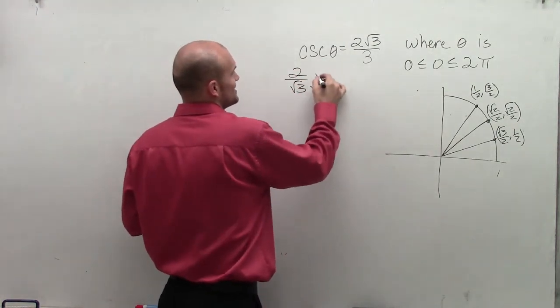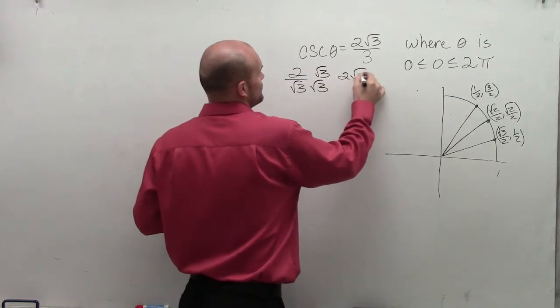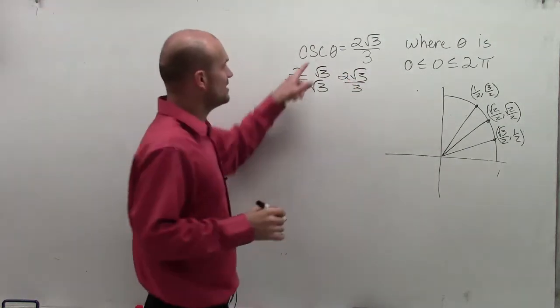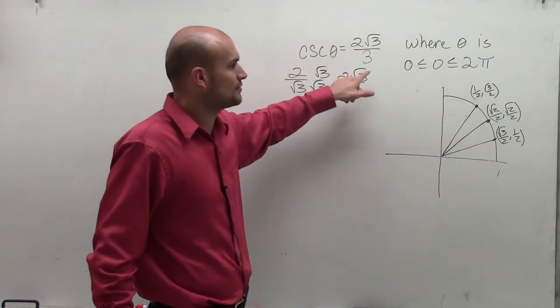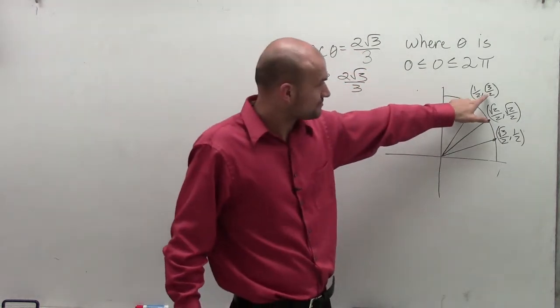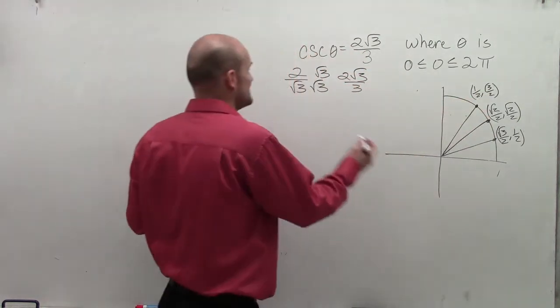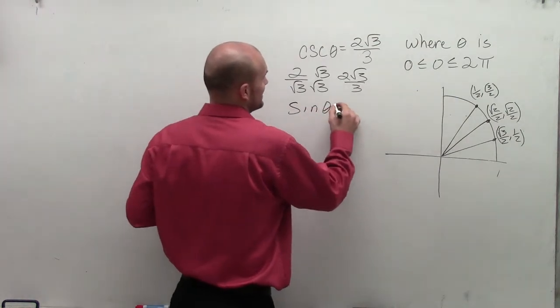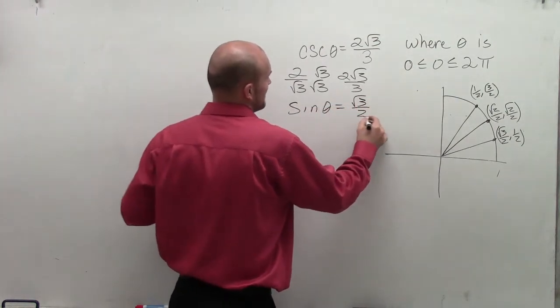Therefore, by rationalizing the denominator, I do get 2 radical 3 over 3. So therefore, that means cosecant of theta, when it equals 2 radical 3 over 3, is the same thing as sine of theta when sine of theta equals square root of 3 divided by 2.